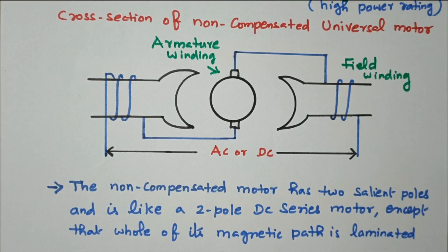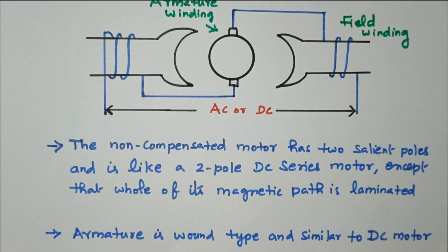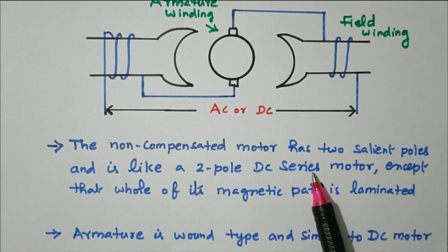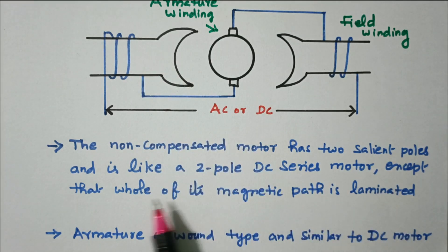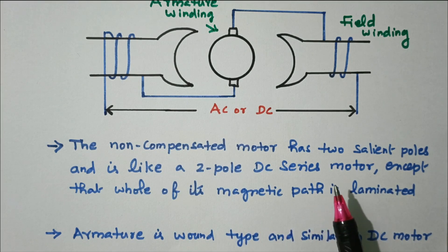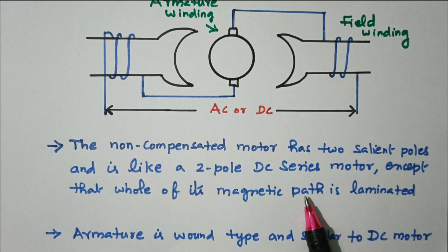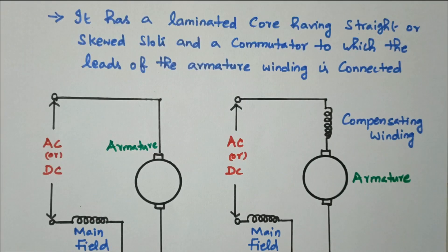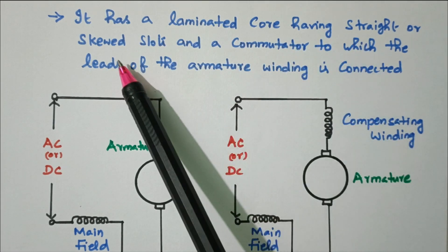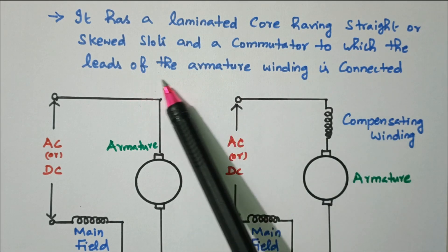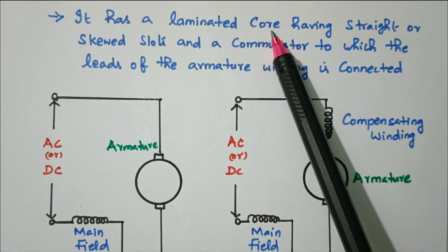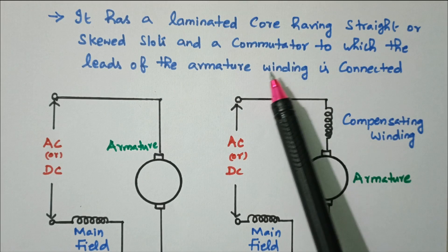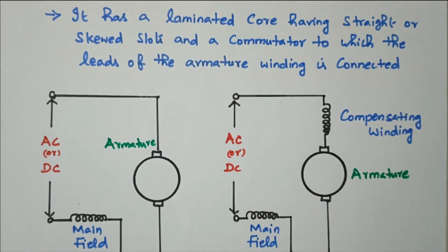The non-compensated motor has two salient poles — salient means projected — and it is like a two-pole DC motor, except that the whole of its magnetic path is laminated. The armature is wound type, similar to a DC motor armature. It has a laminated core having straight or skewed slots, and a commutator to which the leads of the armature winding are connected.